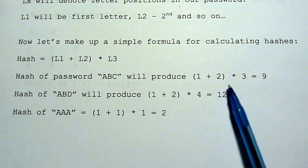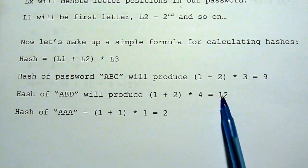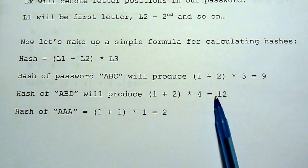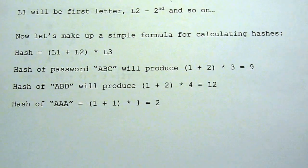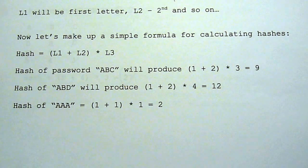And those hashes are one way. There's no way to calculate to get the ABD from number 12. There's no formula to do that. And it's mathematically extremely difficult to do in real world hash functions.